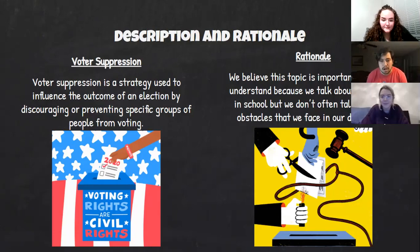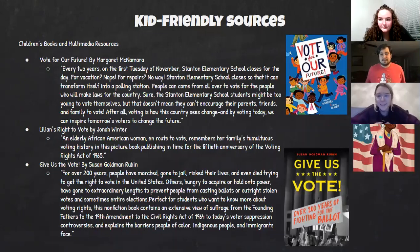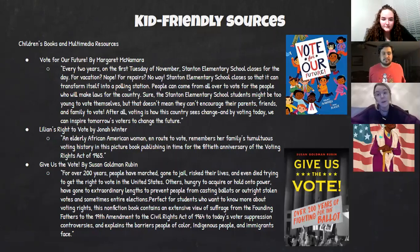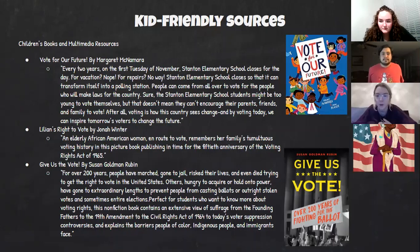Our resources chosen to introduce voter suppression to our class start with Vote for our Future. It talks about an elementary school that transforms into a polling station for the election season. We thought this book would be really helpful because maybe kids don't really understand a polling station and how it works.